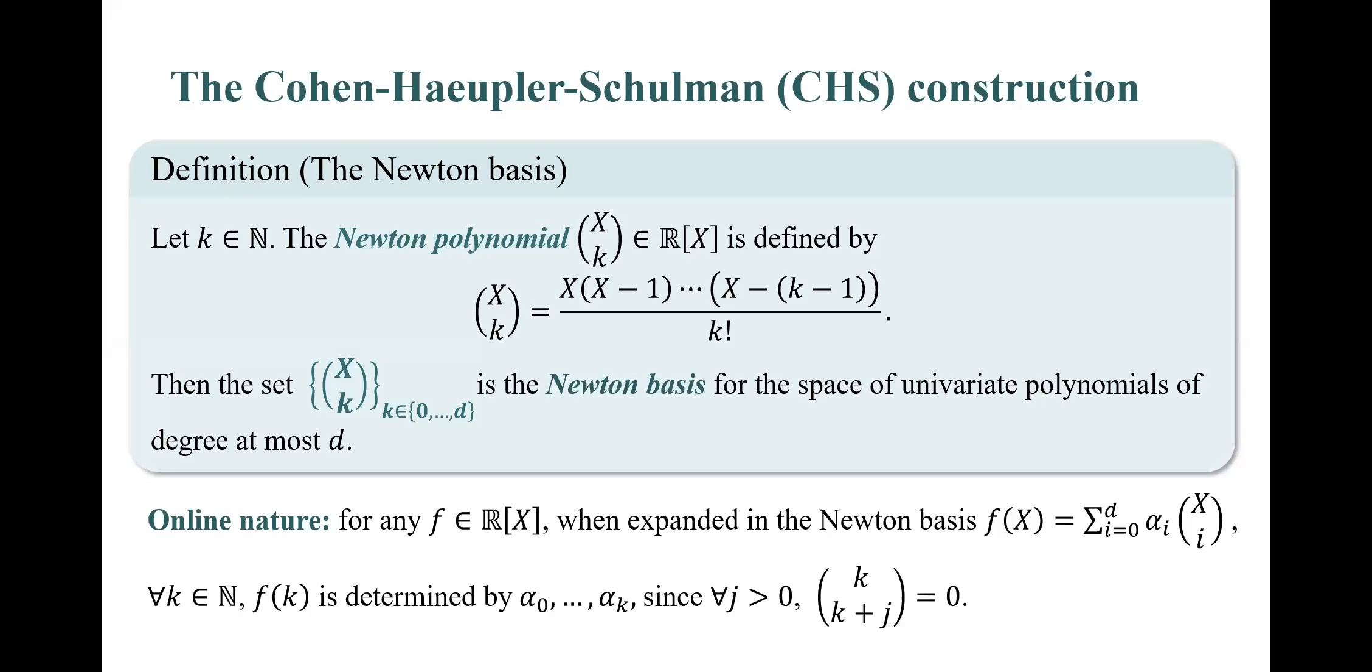The Newton basis is useful in the tree code regime due to its online nature. For any real univariate polynomial f, when f is expanded in the Newton basis, for any positive integer k, f of k only depends on its first k coefficients. Since for any coefficient with a larger index k plus j, it holds that k choose k plus j is equal to 0.